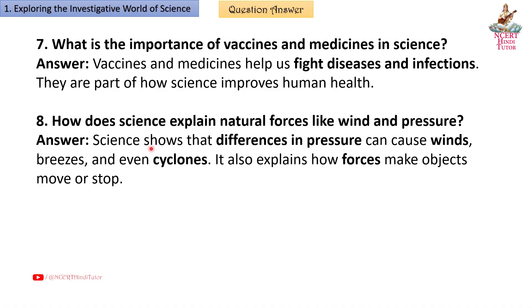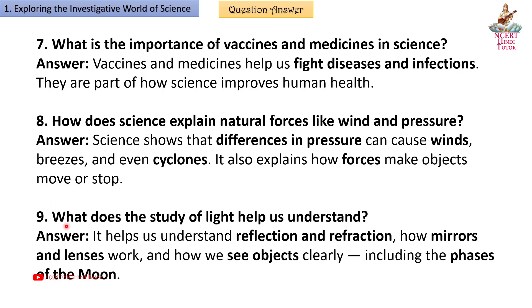Question 8: How does science explain natural forces like wind and pressure? Answer: Science shows that differences in pressure can cause winds, breezes, and even cyclones. It also explains how forces make objects move or stop.